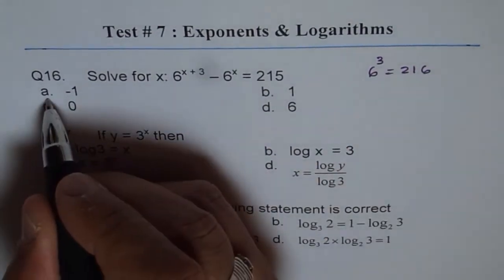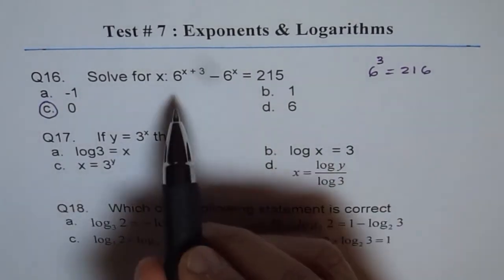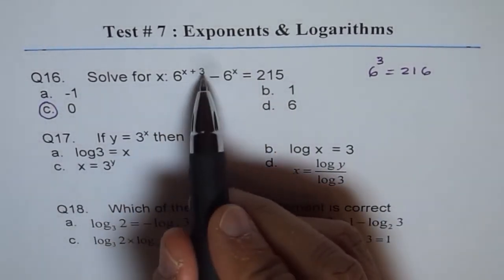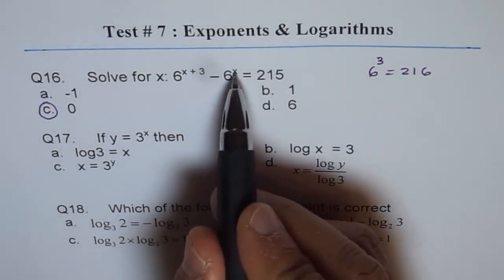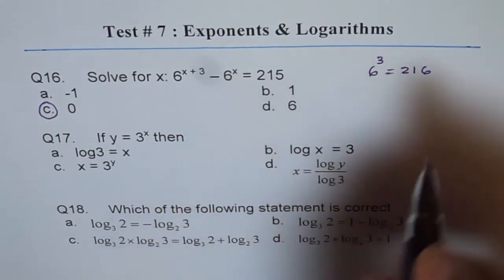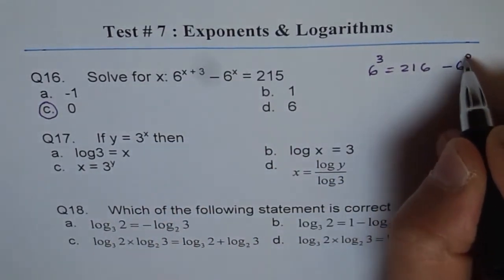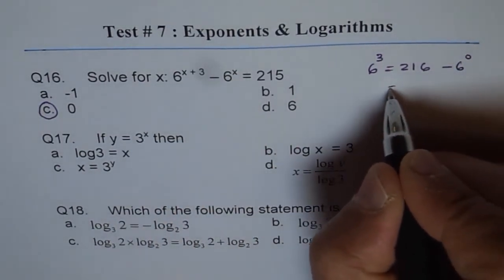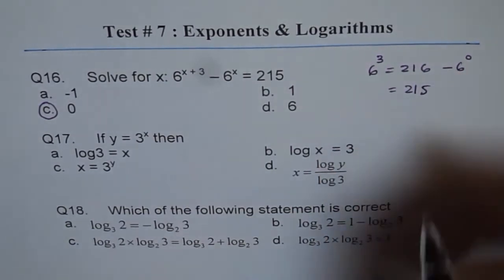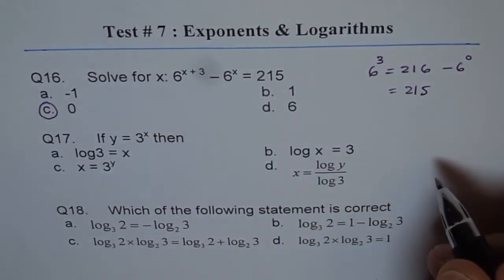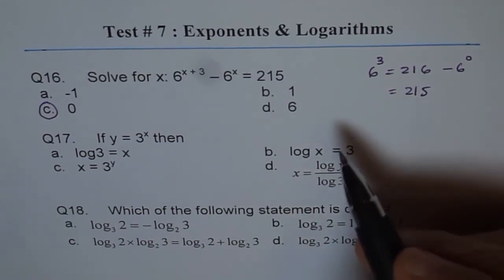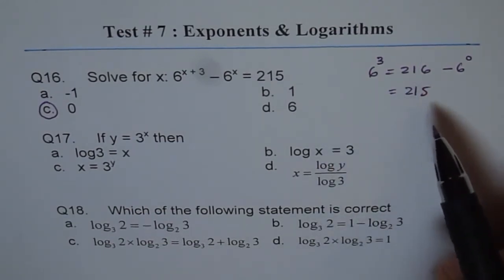So x equals 0 is a good option. If I write x equals 0, I get 6 to the power of 0 plus 3, which is 6 to the power of 3, minus 6 to the power of 0, which is 1. That gives us 216 minus 1, which equals 215. That gives us the answer straight away — and that is the fastest way of doing it.